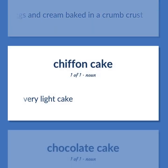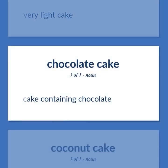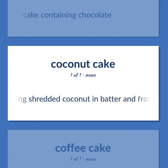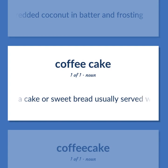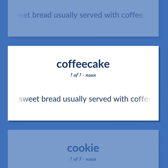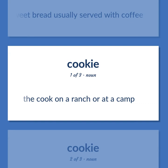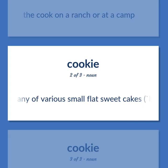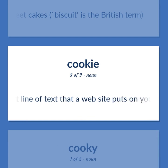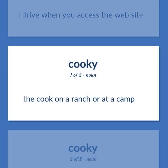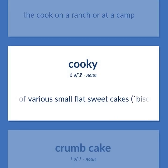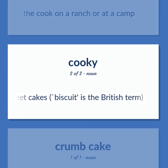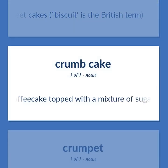Very light cake. Cake containing chocolate. Cake containing shredded coconut in batter and frosting. A cake or sweet bread usually served with coffee. The cook on a ranch or at a camp. Any of various small flat sweet cakes — biscuit is the British term. A cake or coffee cake topped with a mixture of sugar and butter and flour.